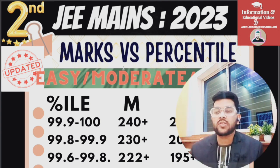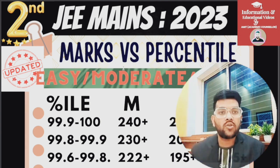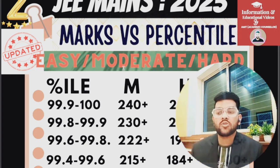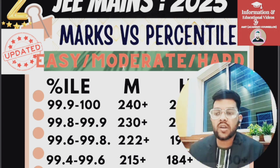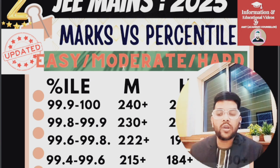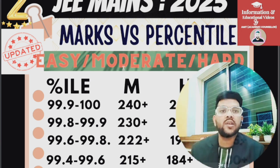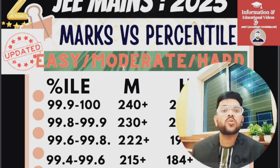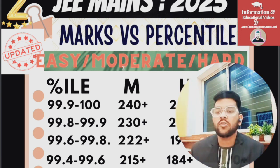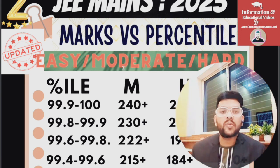Let's get started. For 99.9 to 100 percentile, your marks will be 240 for a moderate paper, 215 for a hard paper, and 260 plus for an easy paper — because if the paper is easy, more students will be able to score higher marks.